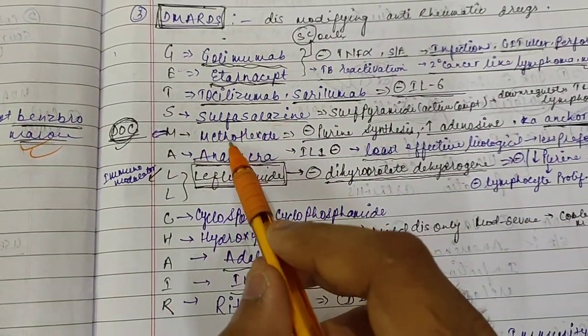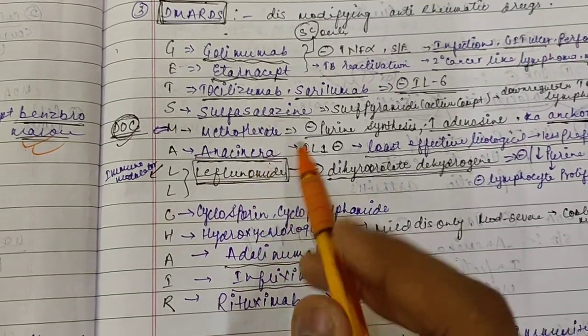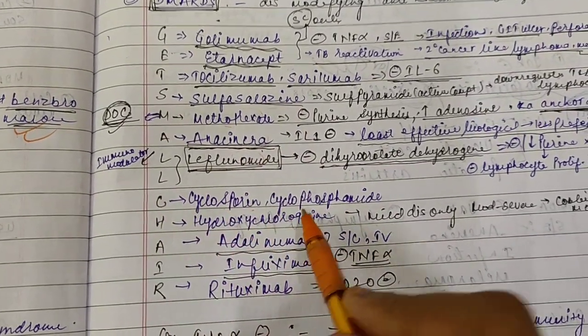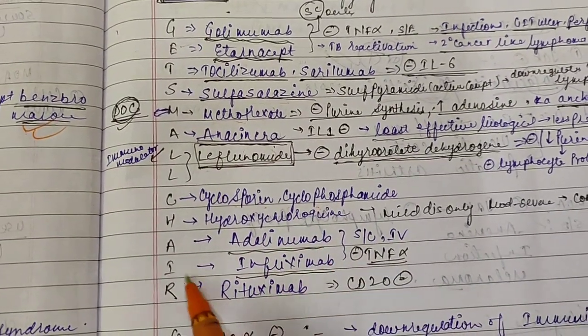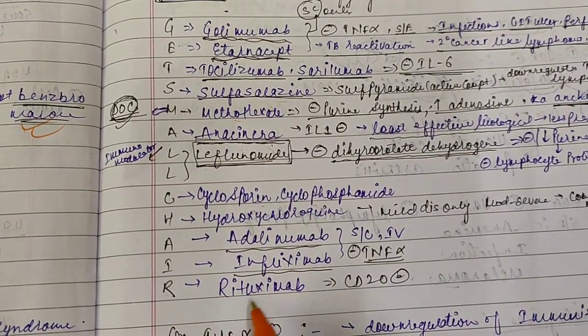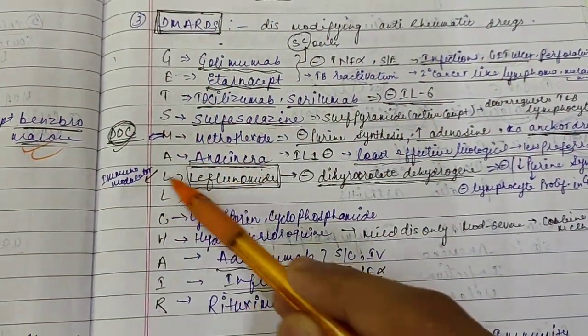Then S for Sulfasalazine, M for Methotrexate, A for Anakinra, then L for Lefumumide, then C for Cyclosporine, then Cyclophosphamide, H for Hydroxychloroquine, A for Adalimumab, I for Inflixumab, and R for Retuximab. So the trick is get a small chair.